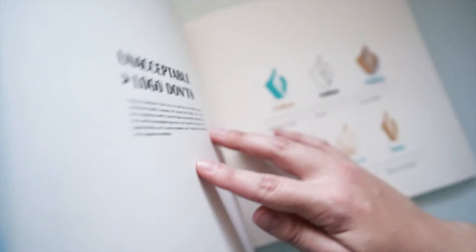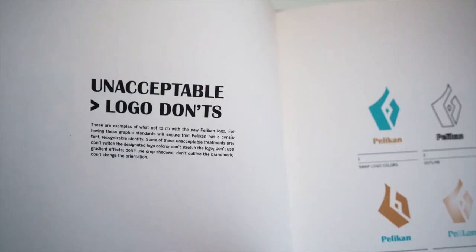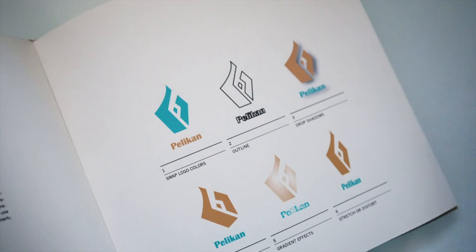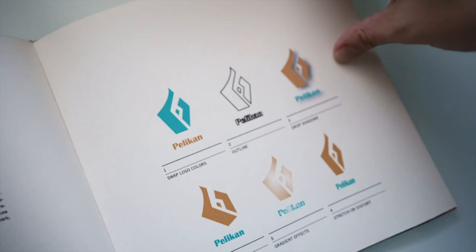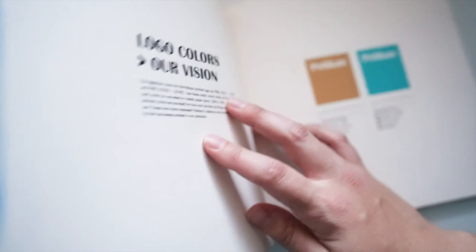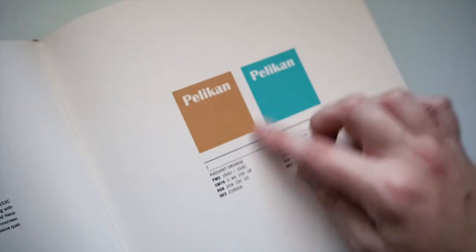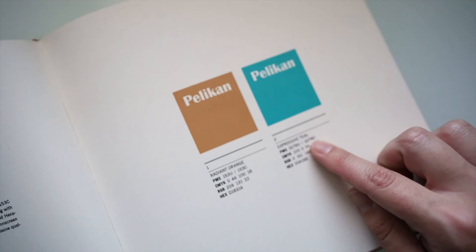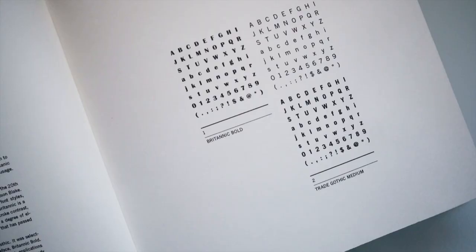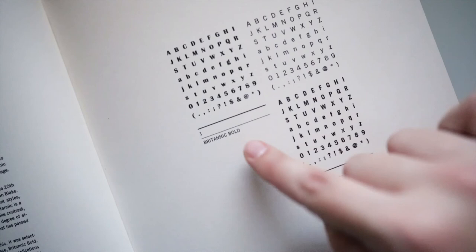Unacceptable uses of the logo. So again, this is things you can't do like swapping the color, outlining it. Pretty obvious things, but you just never know what someone's going to try and do with your logo. The logo colors. And I titled them Radiant Orange and Expressive Teal. So the typeface I used in the logo is called Britannic Bold. And I used Trade Gothic as a supporting typeface.